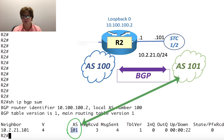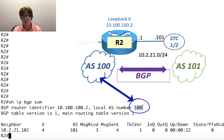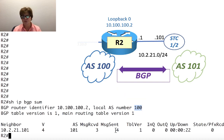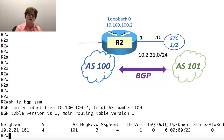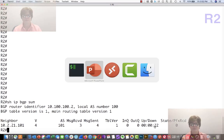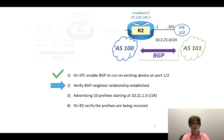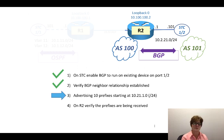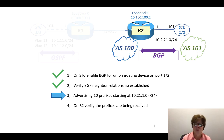Its Autonomous System number is 101, my Autonomous System number is 100. These are the messages we've sent and received, but I have no prefixes received from them yet. That's okay — the next thing we're supposed to do is go over to the Spirent Test Center and advertise 10 prefixes starting at 10.21.1.